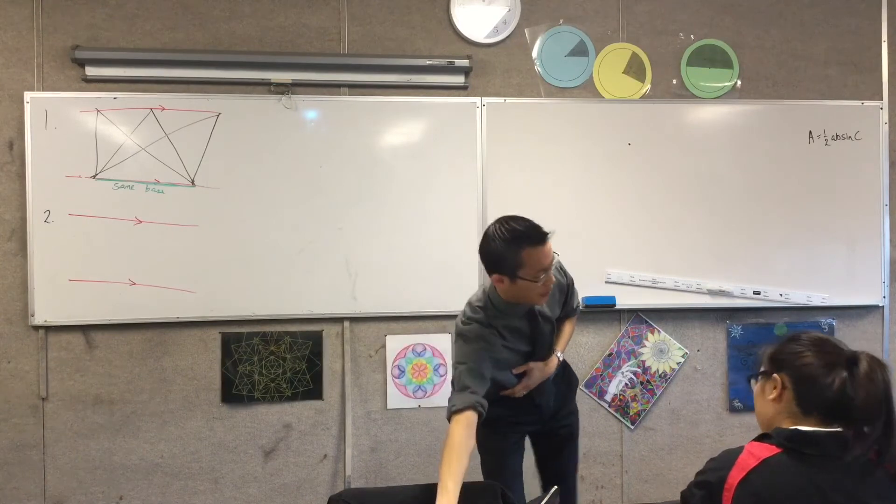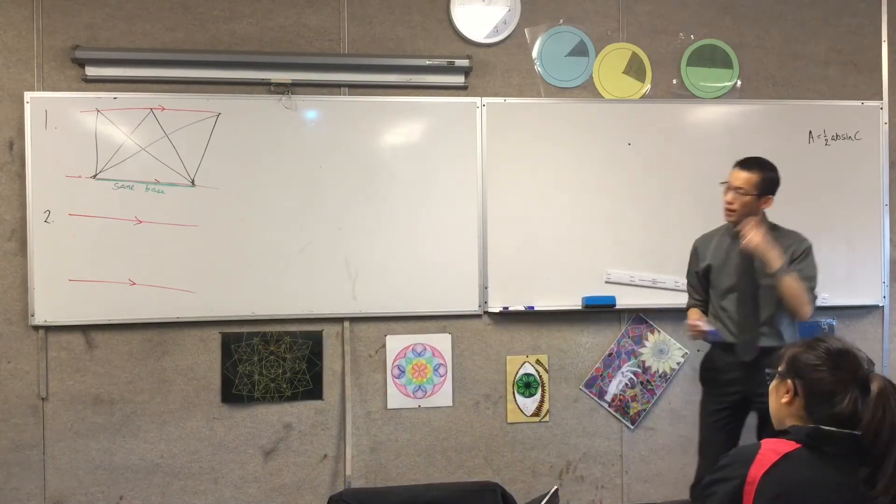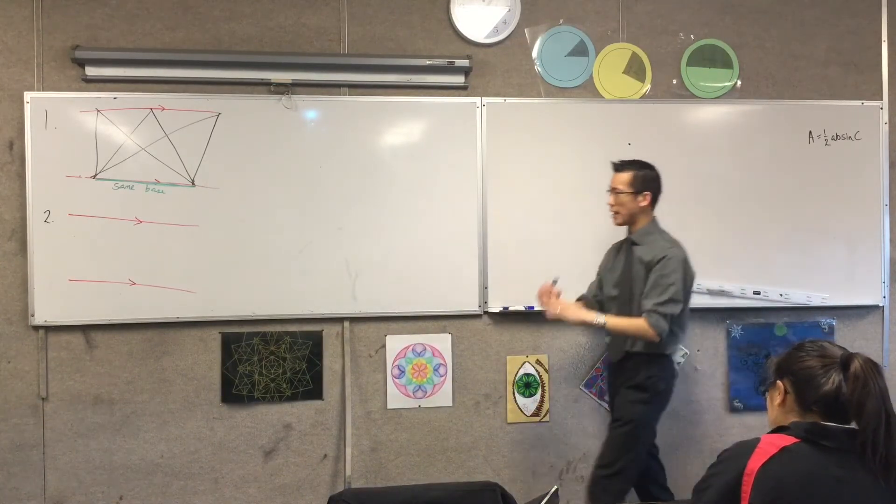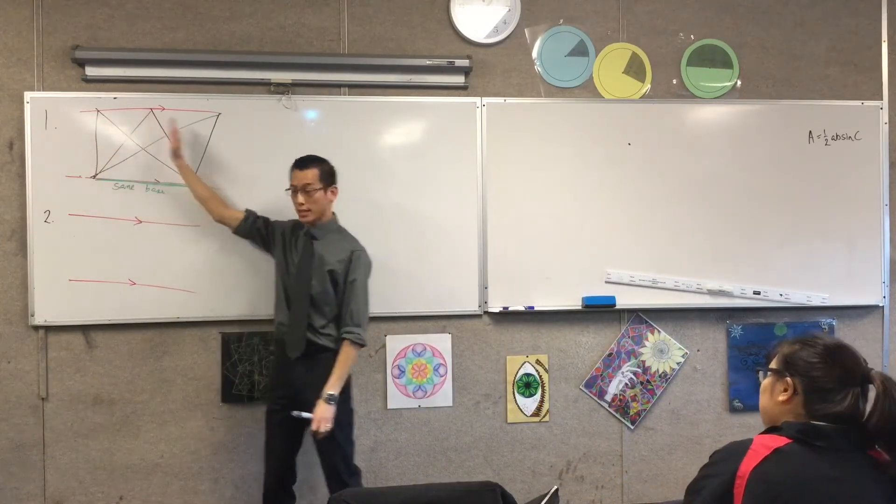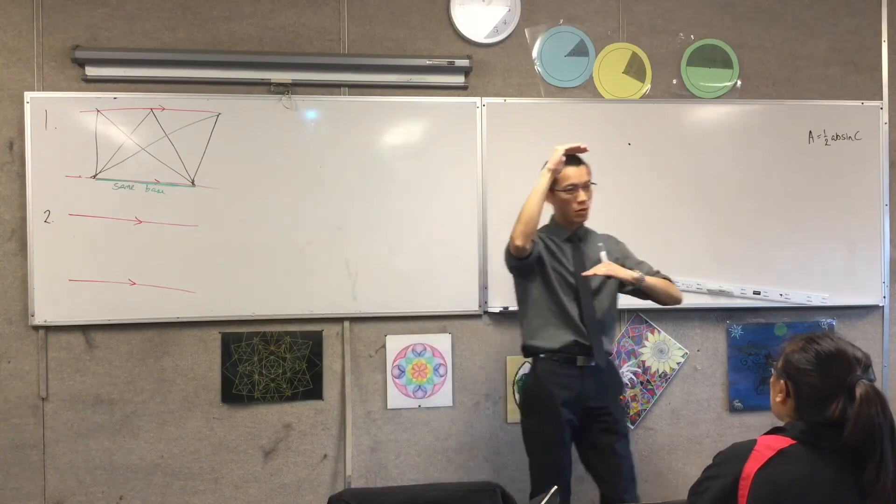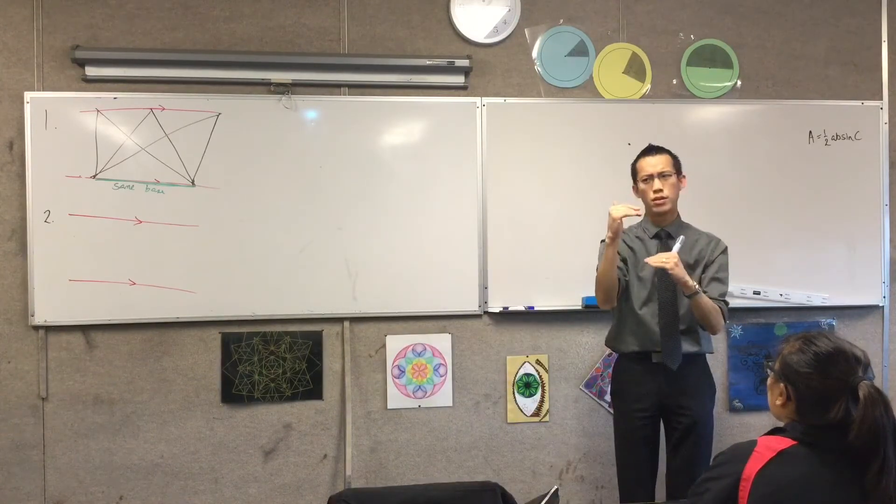Now, because they're all between the same set of parallel lines, the distance between parallel lines all the way along, like the distance from here to here, the perpendicular distance between one parallel line, the top one and the bottom one, is always the same, every single time.